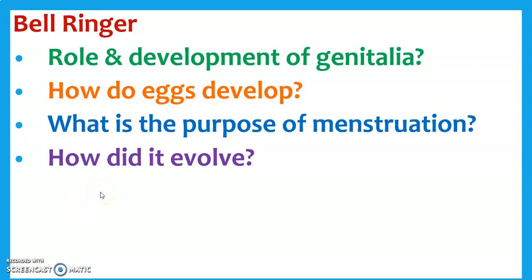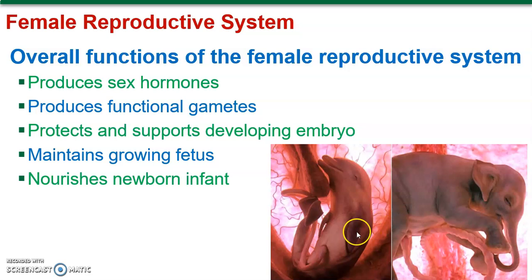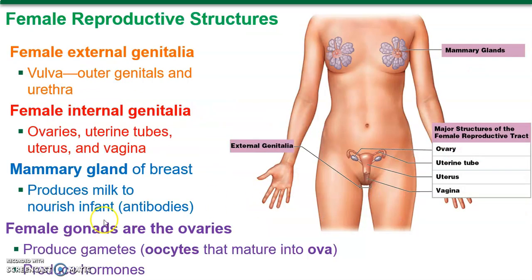All right, people. So here's female anatomy. I'm going to jump right into it because there's a lot to cover and I want to be as efficient as possible. The functions of the female reproductive system: produce sex hormones, and then after fertilization occurs with sperm and egg, provide a protective and supportive environment for the embryo and fetus as it's developing. We'll talk about infertility issues a little bit later, and at the end we'll look at some IVF as well.